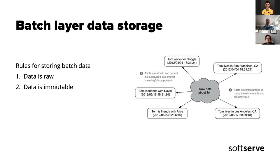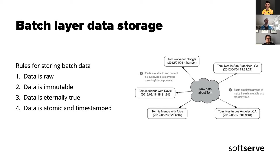We do this for two reasons. First, we can always roll back if something was a mistake. Second, we can derive the state of the database at any point in time — we can see where people were living in April and then in June. Data is eternally true: any stored data is a fact about Tom. We know that during a certain period Tom was living in San Francisco. Data is also atomic: split into separate facts with timestamps, so we can determine the current version of information and roll back or move back in time if needed.